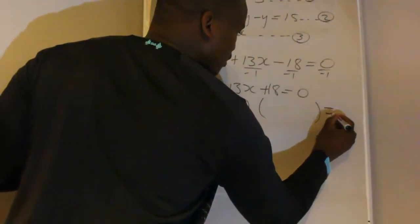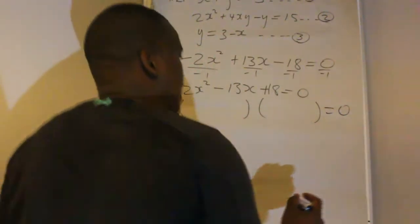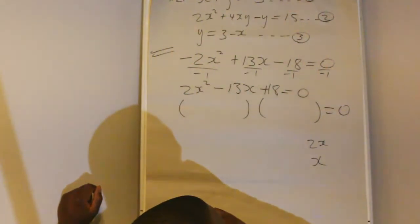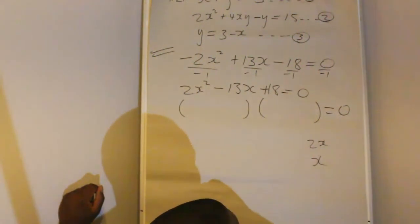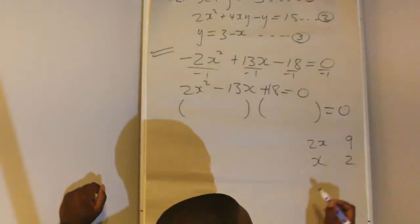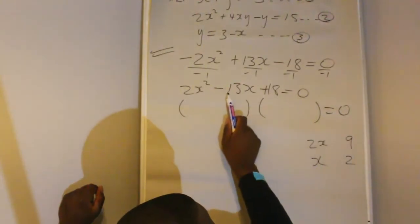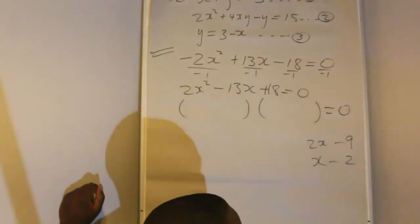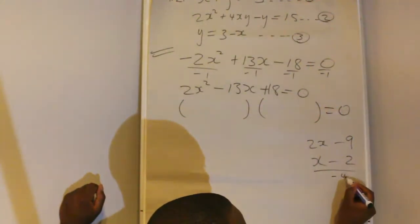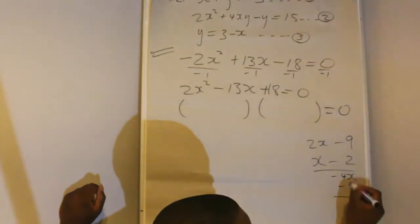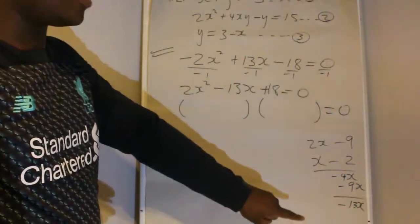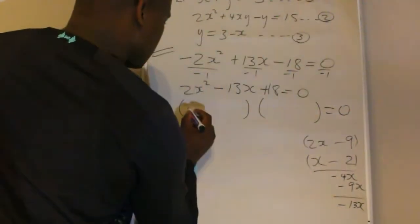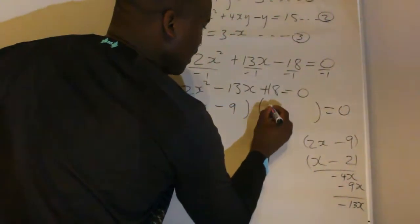Try to factorize it. Factors of 2x squared are 2x and x. Factors of 18 — try 9 and 2 — looks like 9 and 2 would work. The middle term is negative and the third term is positive, so both signs are negative: minus 4x and minus 9x add to give minus 13x. So we get (2x minus 9)(x minus 2).